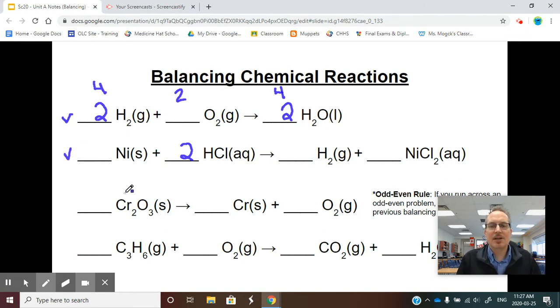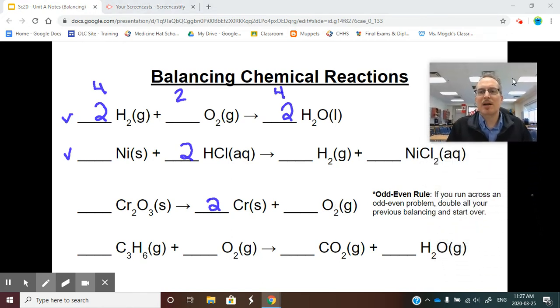Let's go to example number three. Cr2. Chromium. I have two of them, which means I only have one here, so I need two chromiums. I have three oxygens, two oxygens. That's going to be a problem for us because there's no whole number I can put in front that turns a two into a three.